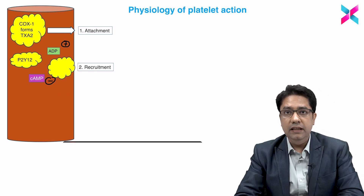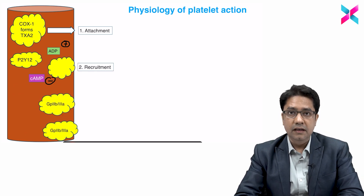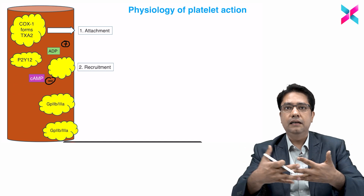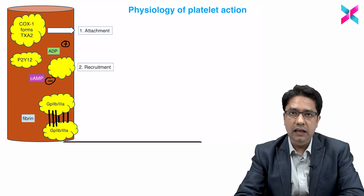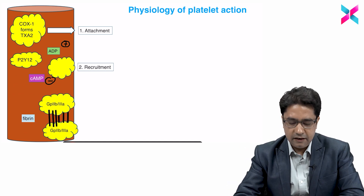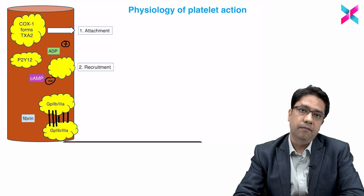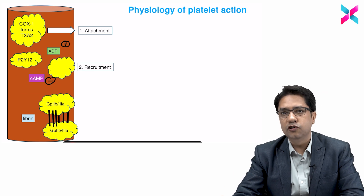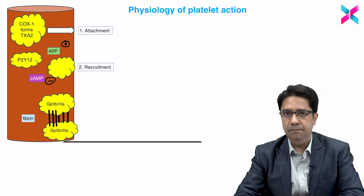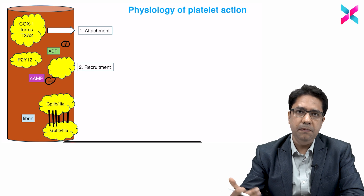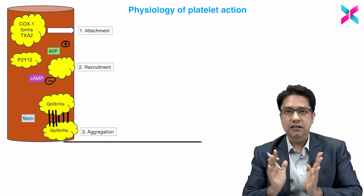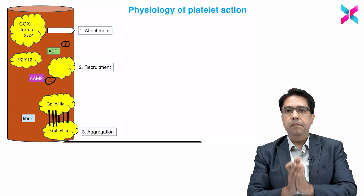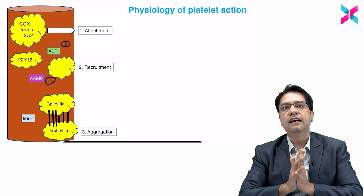When the platelets are recruited, they are cross-linked with the help of a clotting factor called fibrin. Fibrin has receptors on the platelet — the GP2B3A receptor (GP standing for glycoprotein). This third step is known as platelet aggregation.